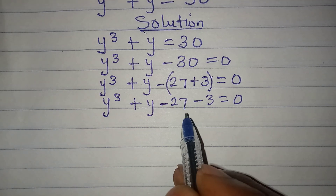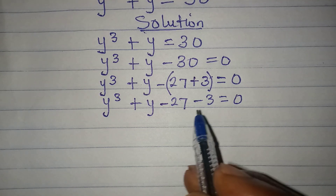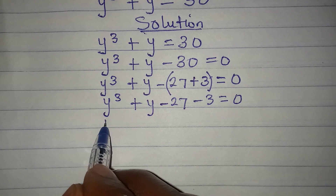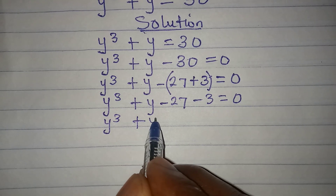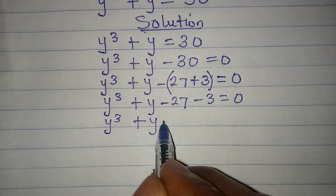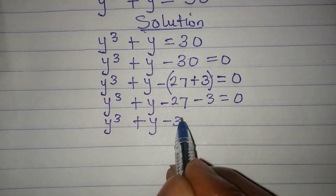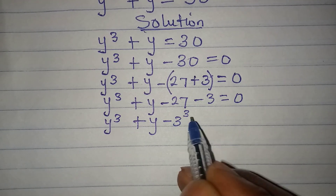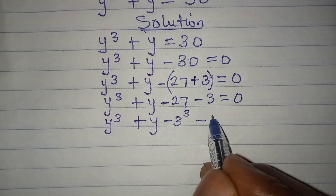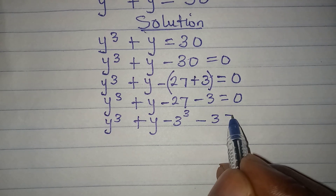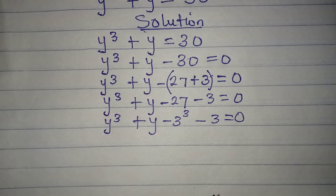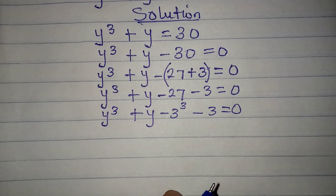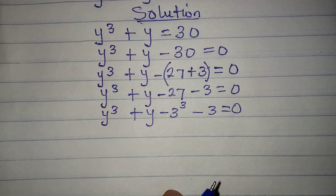Let's express 27 as a power of 3. So we have y to the power of 3 plus y minus 3 to the power of 3 minus 3, equal to zero.